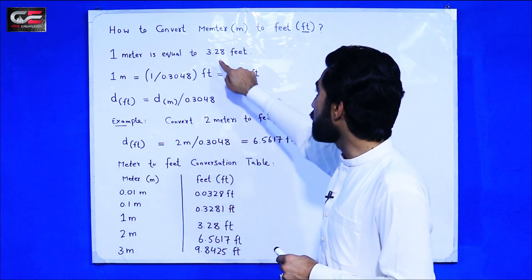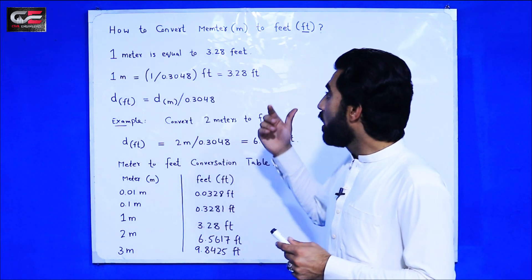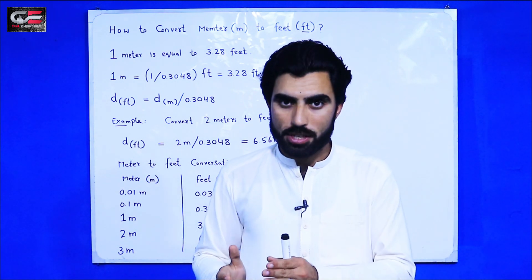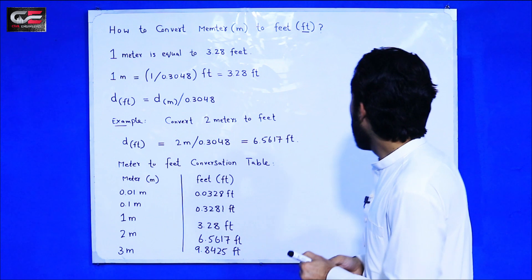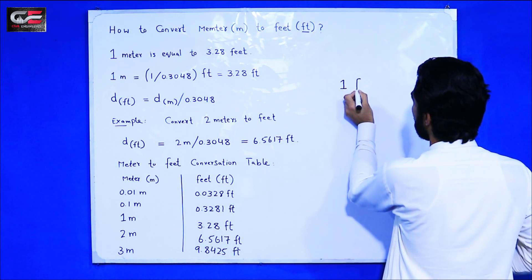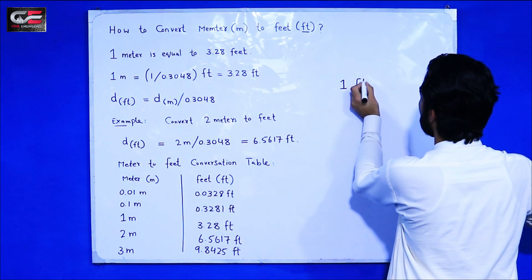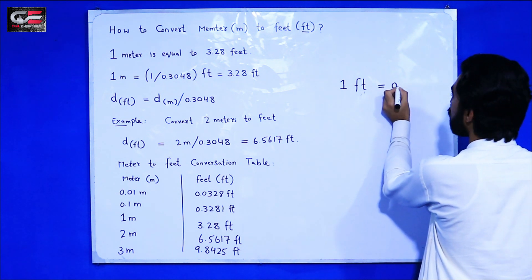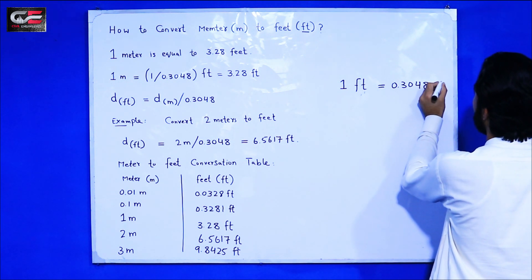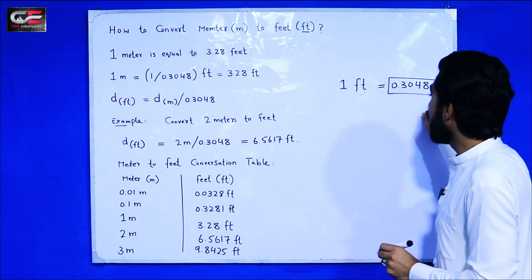It means we have 3.28 feet in 1 meter. Now if you want to convert a meter to feet, remember here that 1 foot is equal to 0.3048 meter. Remember this point that 1 foot is equal to 0.3048 meter.